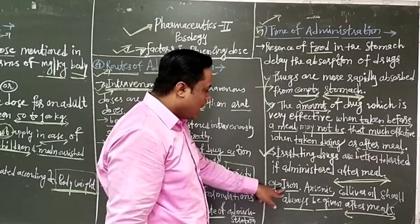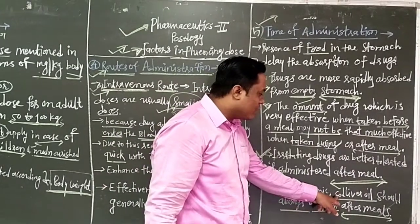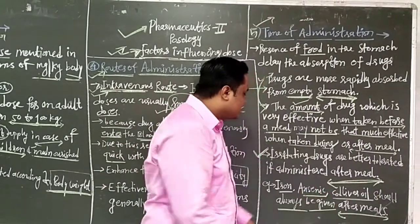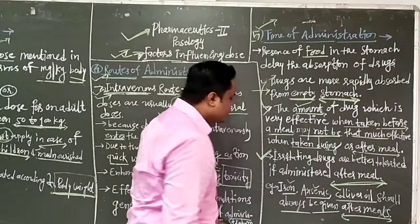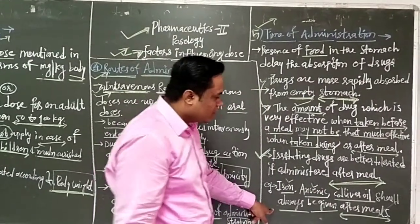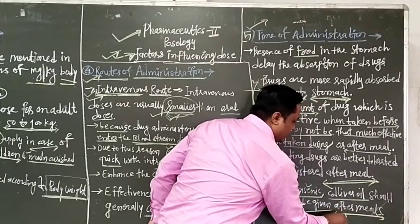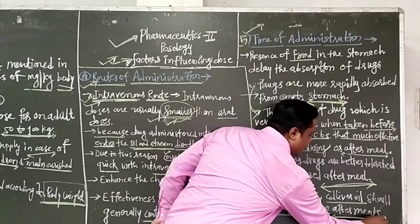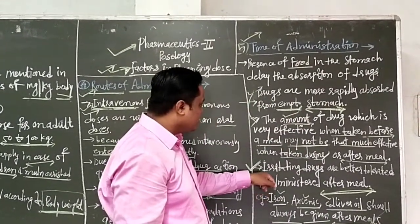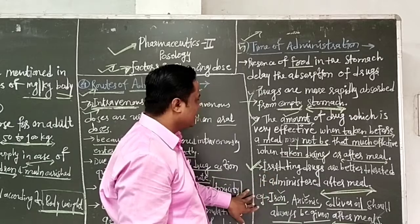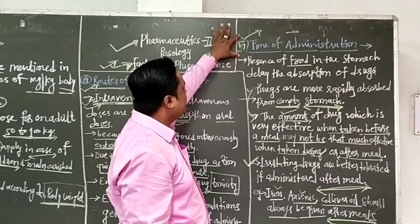The second example is irritating drugs. Irritating drugs are better tolerated when administered after meals, because they irritate the empty stomach. For example, iron, arsenic, and castor oil are examples of irritating drugs which should always be given after meals. If given after meals, they do not irritate the empty stomach. This is the example of time of administration.